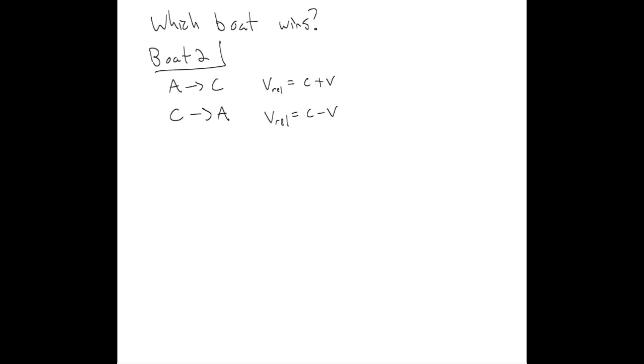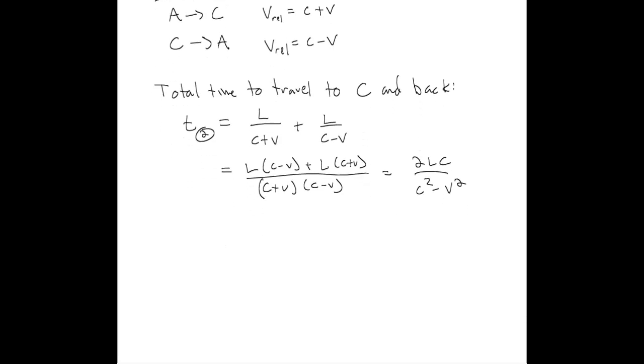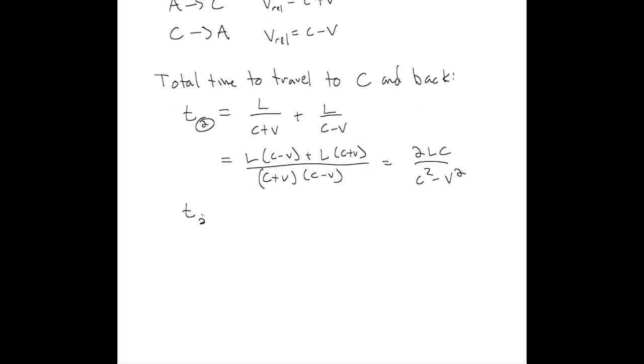So the total time it takes for boat 2 to travel to C and back is given by the distance over the relative speeds for each leg. And we can simplify this by putting the terms over a common denominator. And we find that the total time it takes is given by this expression. So that's for boat 2.